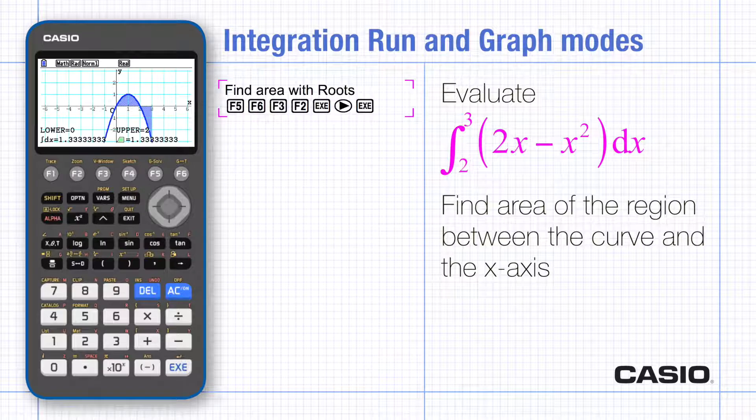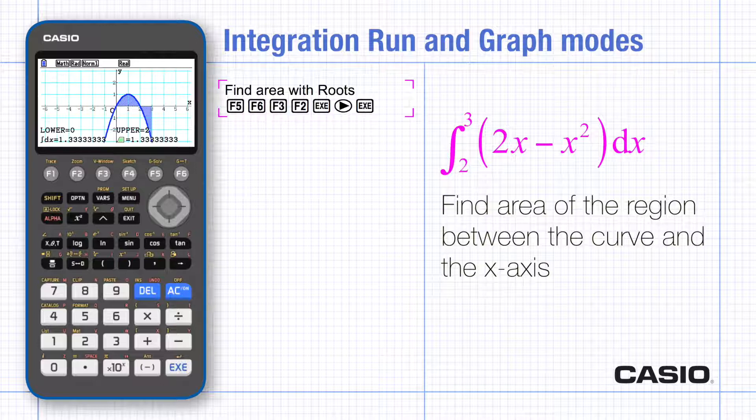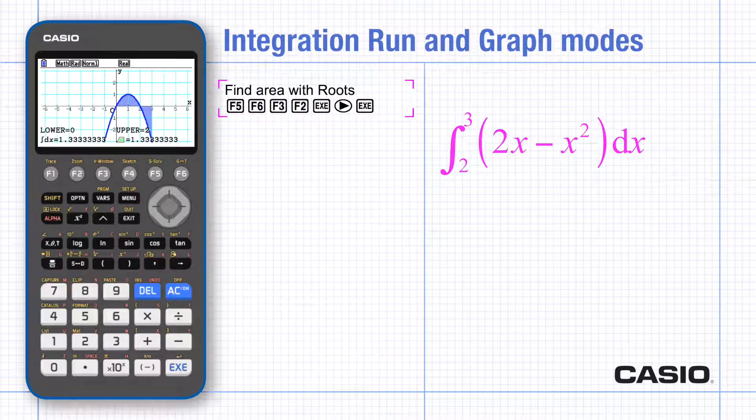The CG50 will also find the area between two graphs, again without the need for you to find the points of intersection. This is a really good check for all your work when you're asked to do this calculus in an exam question.